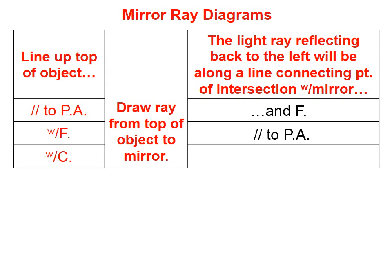These first two rules are kind of like opposites of each other. The first one: go in parallel to the principal axis, reflect through f. The second: go in on a line through f, reflect parallel to the principal axis. So those first two rules are kind of opposites of each other.